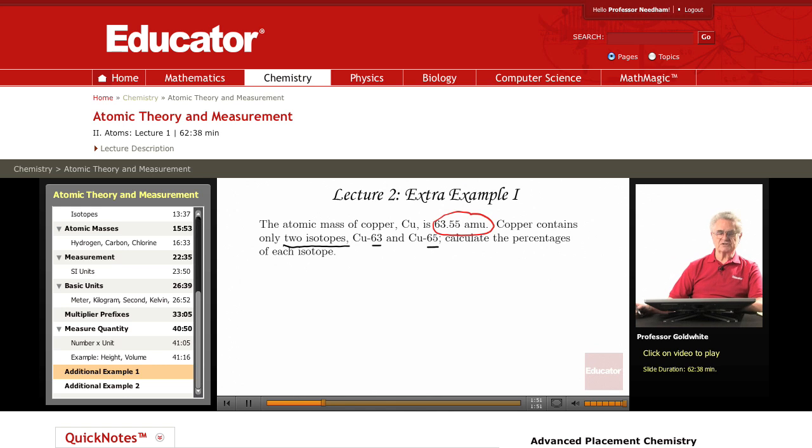Now let us suppose that copper-63 has a mass of exactly 63 amu per atom and is present to the extent of x percent. Copper-65 has a mass of 65 amu per atom exactly and must be present to the extent of 100 minus x percent.